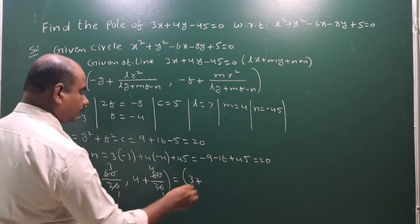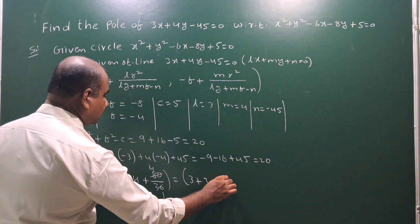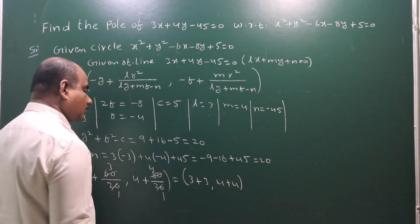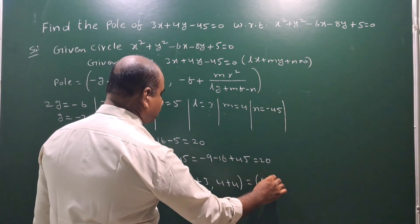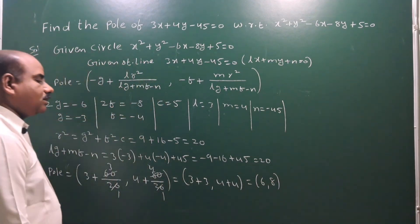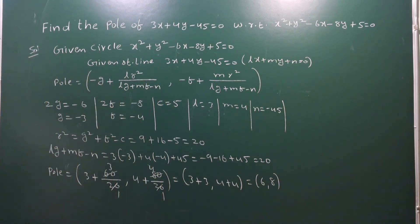So 3 plus 3 comma 4 plus 4, that equals 6 comma 8 is the pole of this problem. Thank you.